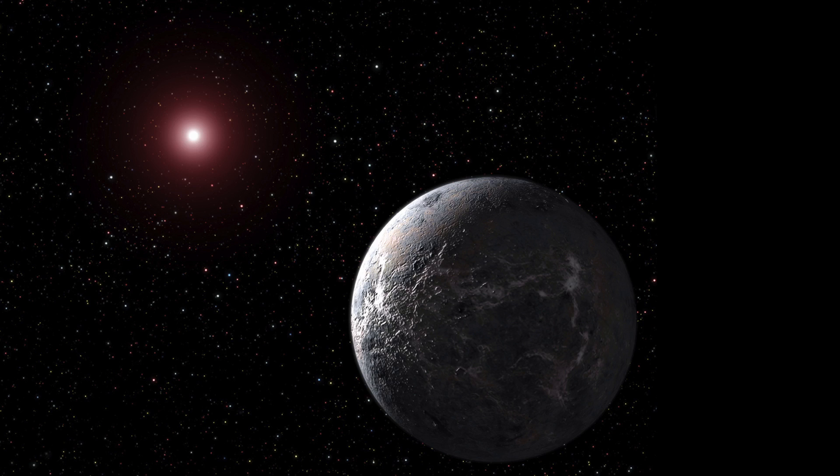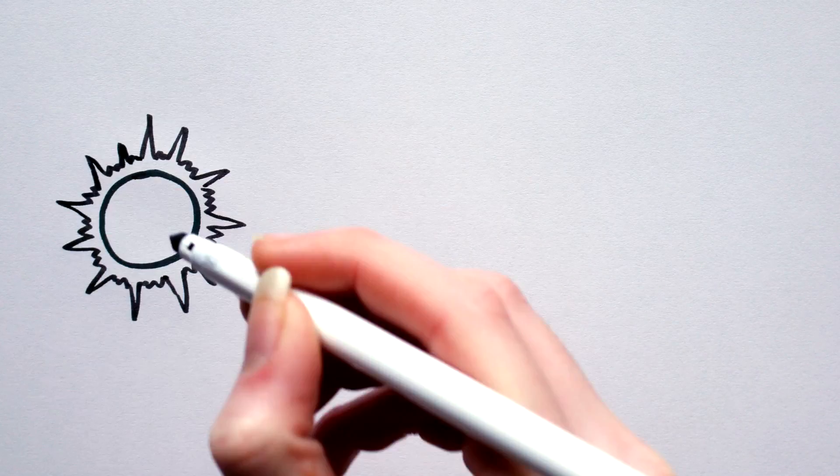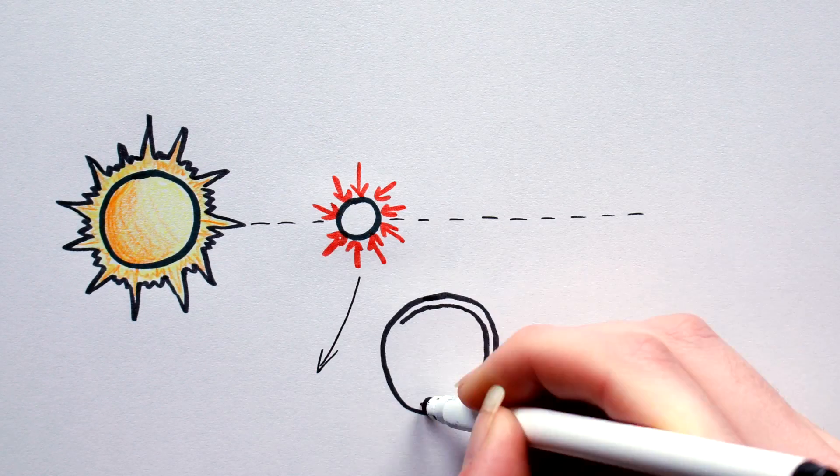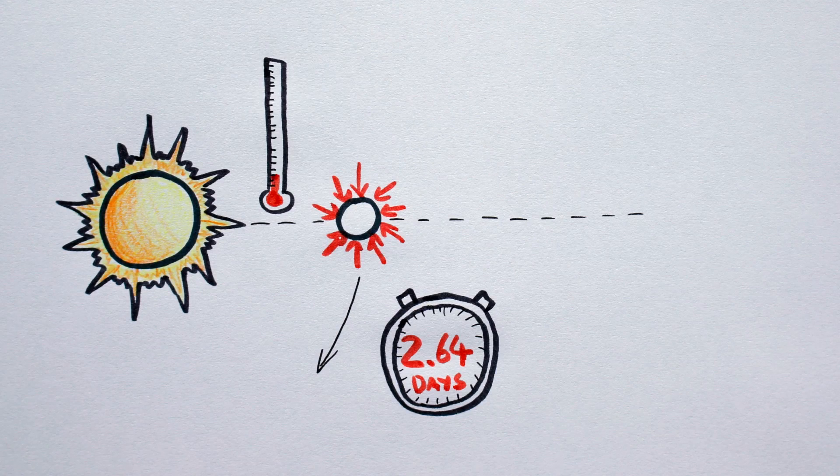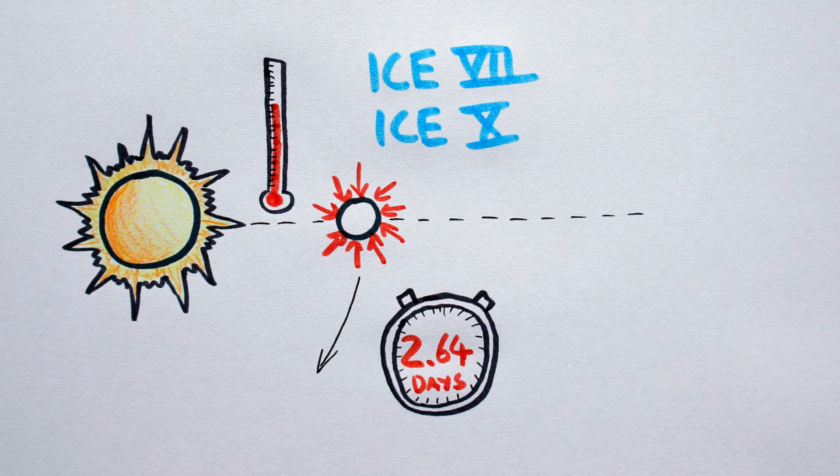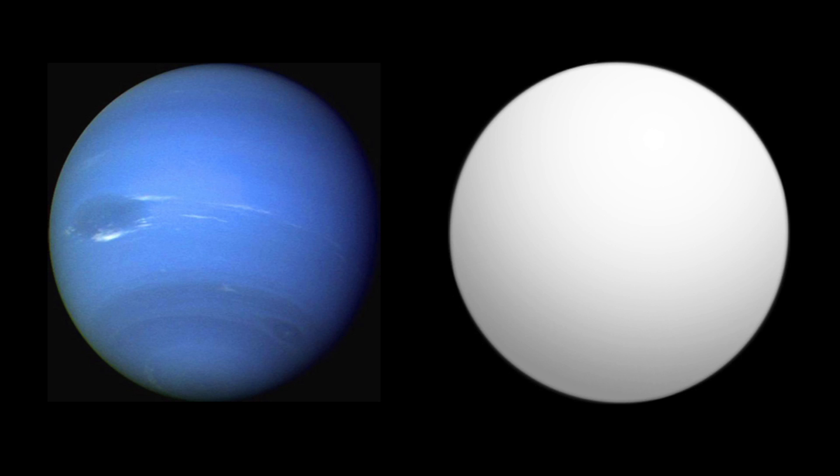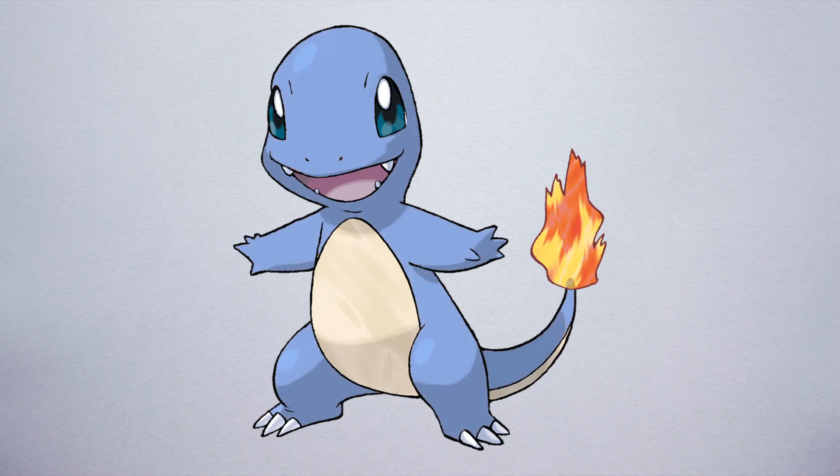Weirdly, ice planets needn't be cold. Take Gliese 436b, for example. It's a Neptune-sized planet that orbits its star roughly every two days. The planet is very hot due to its proximity to its host star and under high pressure due to its mass. The water on this world remains frozen in the form of exotic ice phases like Ice 7 and Ice 10, despite the temperatures being over 700 Kelvin. Gliese 436b, the ice-fire-type pokeplanet.